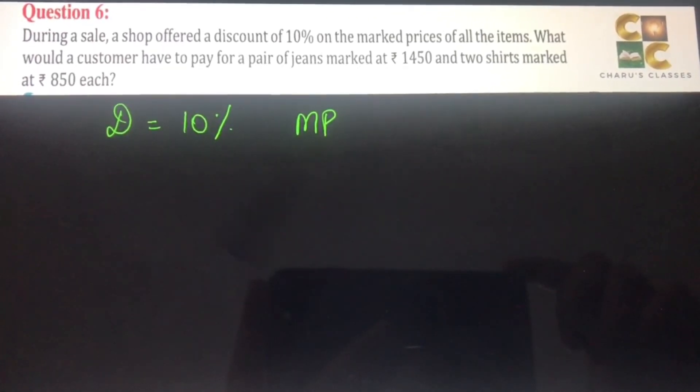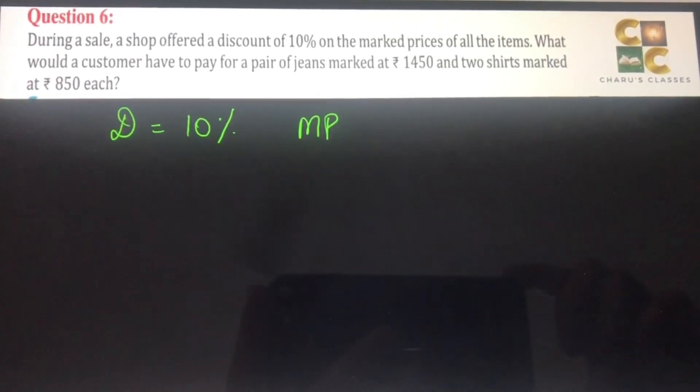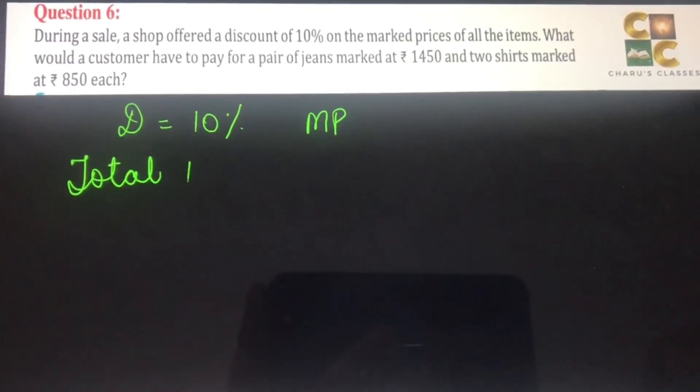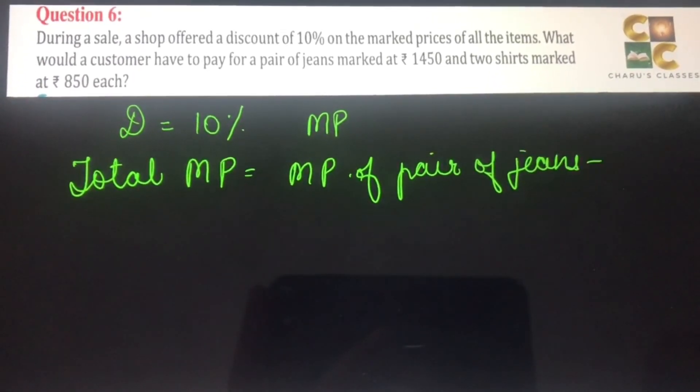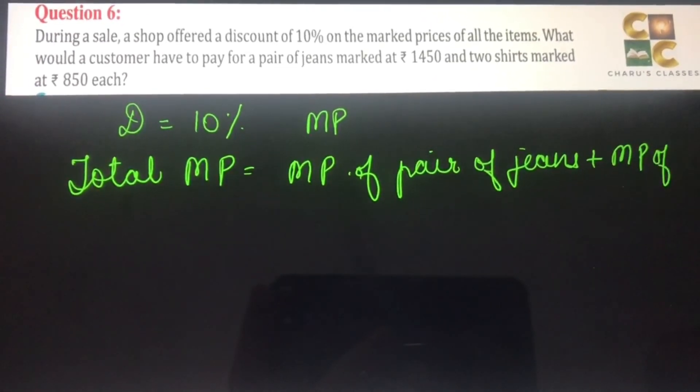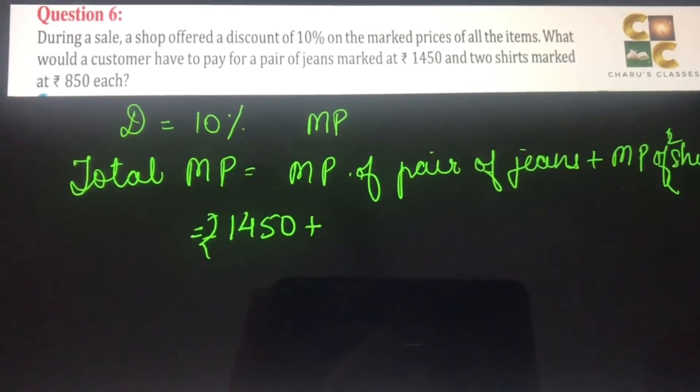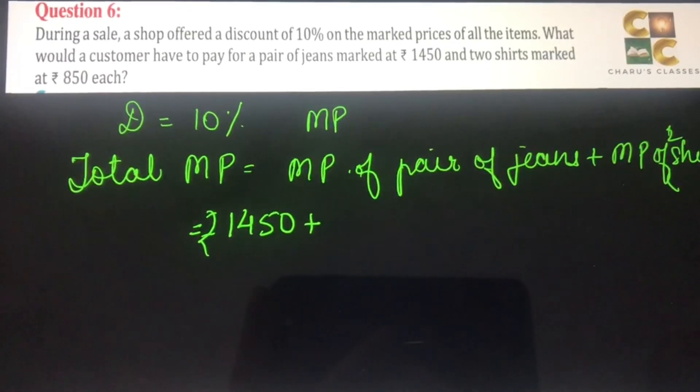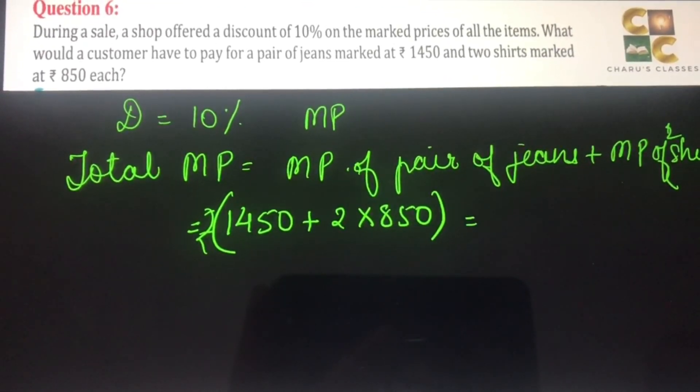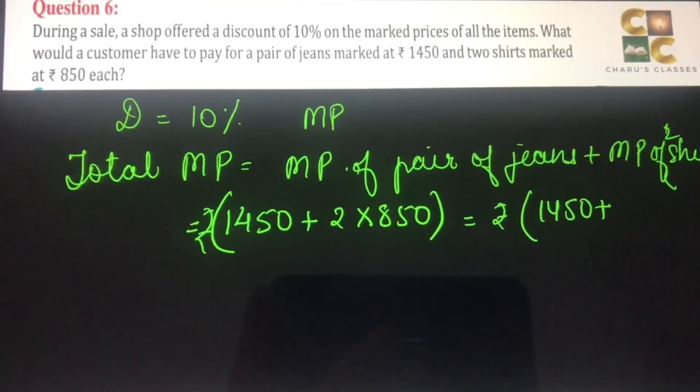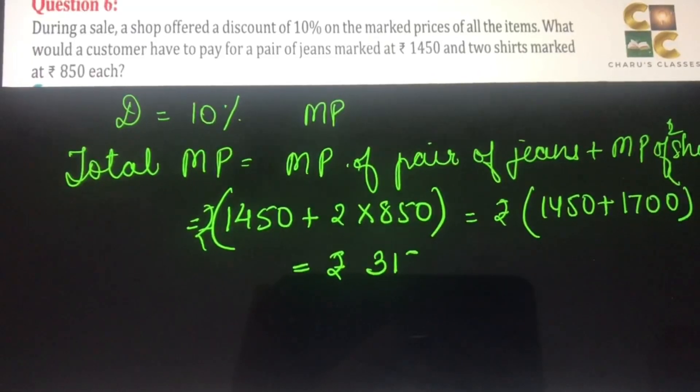A shop has a discount running on the marked price. Mark price is the price written on the price tag. So first let's find out the total mark price. Total mark price is the mark price of pair of jeans plus mark price of two shirts. Pair of jeans costs rupees 1450 and two shirts are marked at rupees 850 each, so two times 850. That makes it 1450 plus 1700, so the total mark price is 3150 rupees.